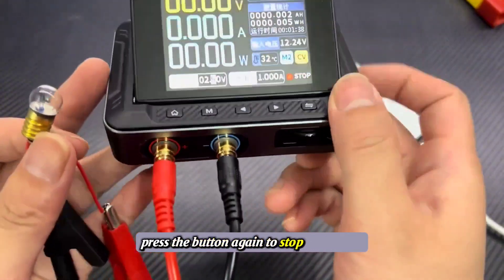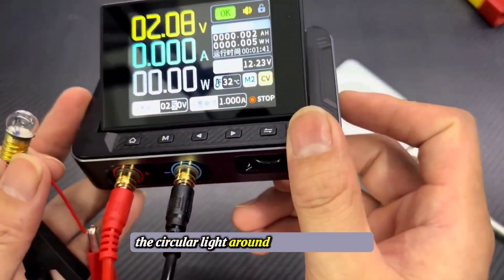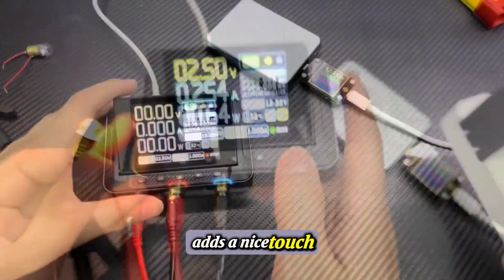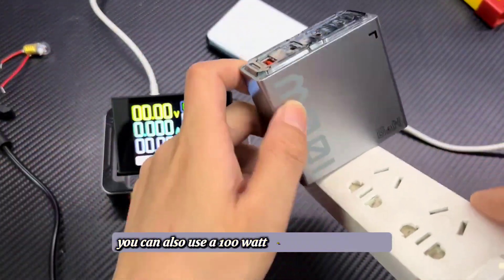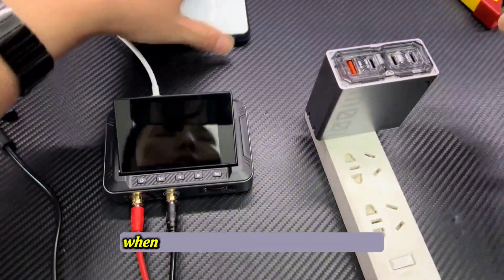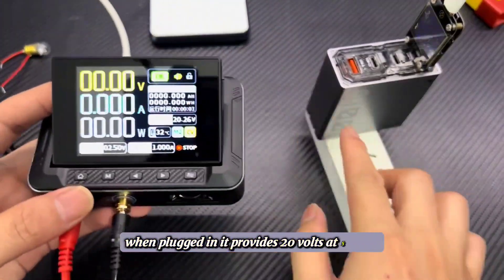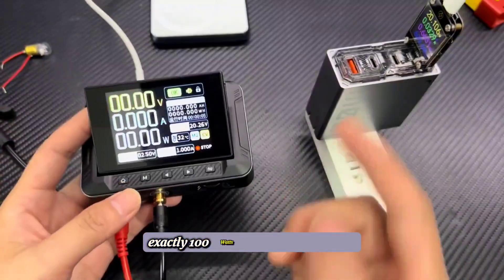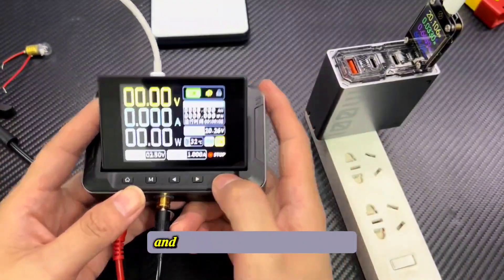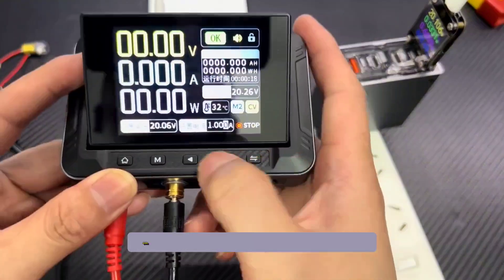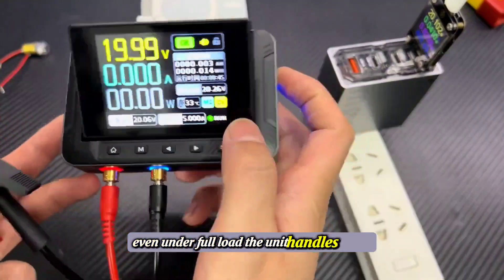Press the button again to stop the output. The circular light around the output button adds a nice touch. You can also use a 100-watt fast-charging adapter. When plugged in, it provides 20 volts at 5 amps, exactly 100 watts. Let's set it to 20 volts and adjust the current to 5 amps. Even under full load, the unit handles it well.